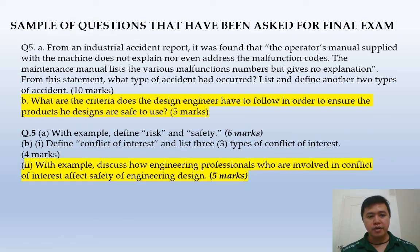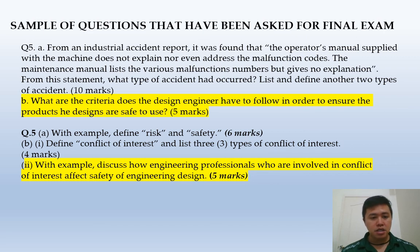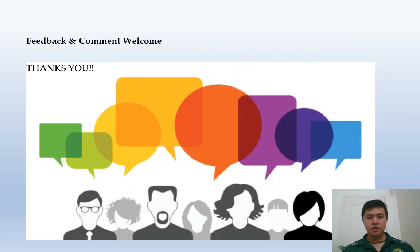The following are sample questions that have been highlighted for the final exam. Question 5b: What are the criteria a design engineer must follow to ensure the products they design are safe to use? This is worth five marks. The second question: With an example, discuss how engineering professionals involved in conflicts of interest affect the safety of engineering design. That concludes the presentation — feedback and comments are welcome. Thank you very much.